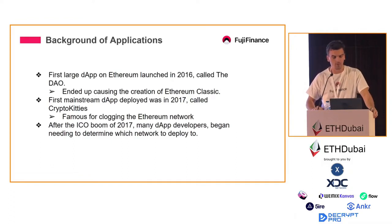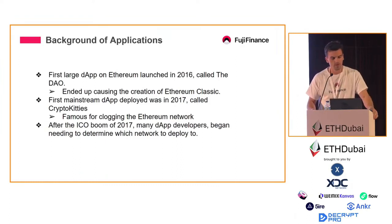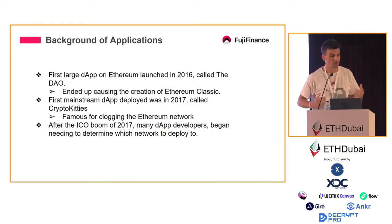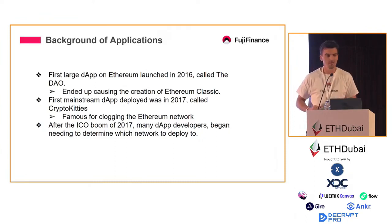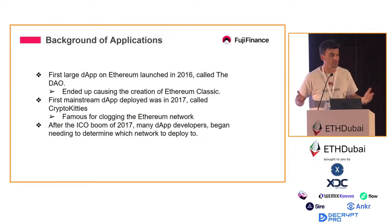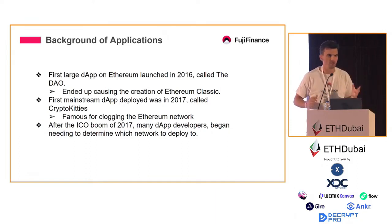Going over a little bit of the history of applications in general, we're going to talk about how applications have evolved over the last few years and where I see them evolving moving forward. The first large application on Ethereum really launched back in 2016 — this is known as The DAO. Unfortunately that dApp got hacked, which ended up creating Ethereum Classic. Then shortly thereafter, the first mainstream application launched in 2017, very well known as CryptoKitties, which basically clogged the entire Ethereum network.